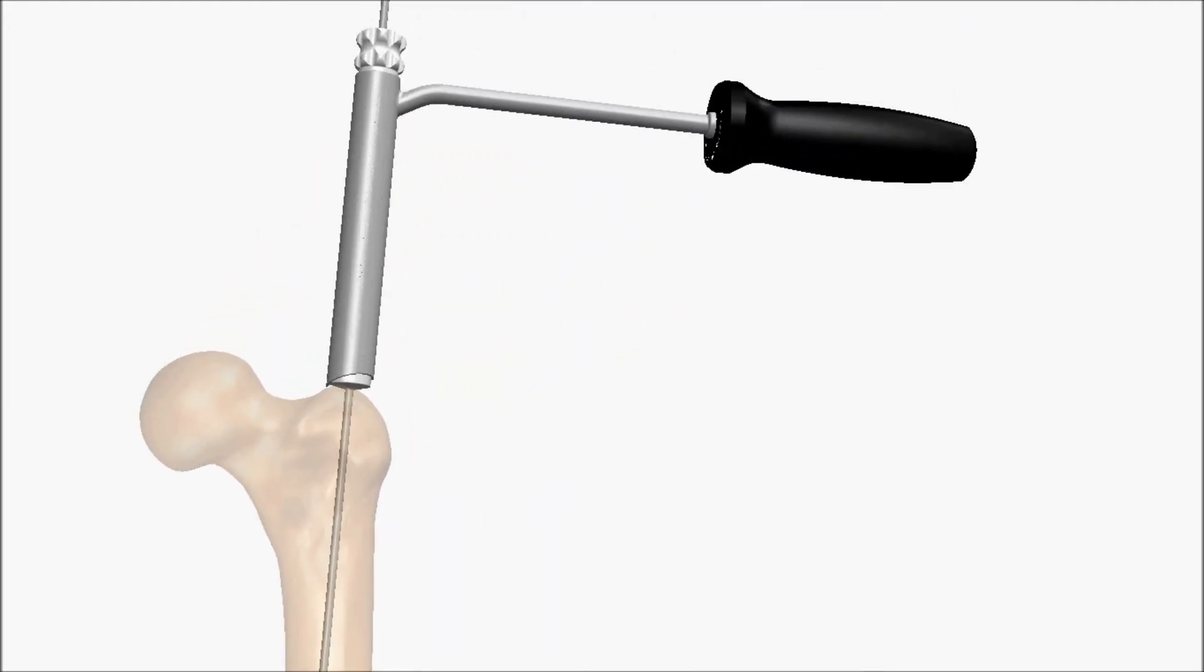use the proximal reamer to open the femur. Reaming depth is at the discretion of the surgeon, but should be to at least the first groove on the reamer blades as seen radiographically. Take care not to remove bone from the medial cortex.